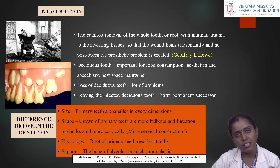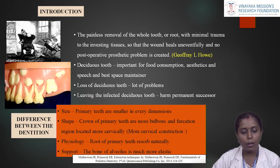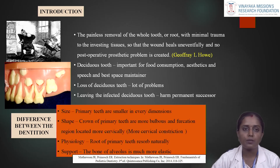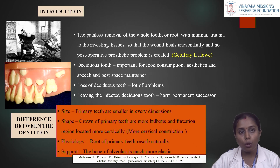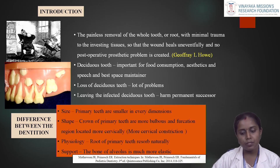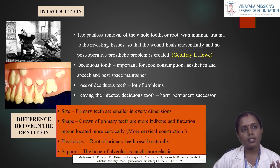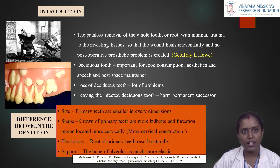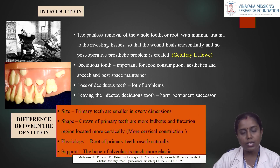We must know the significance of primary teeth and the differences between primary and permanent teeth during extraction. First, the size of primary teeth is smaller in dimensions compared to permanent teeth. The shape is more bulbous — the mesiodistal width is larger compared to the labial width, and the axial width is small. The furcation region is located more cervically, and a larger cervical constriction is present, which makes it easier for fracture during extraction. These are significant factors especially when extracting primary molars.